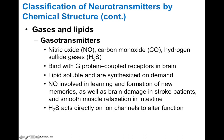Gases and lipids can also be used as neurotransmitters. There's a whole class called the gasotransmitters, like nitric oxide, carbon monoxide, and hydrogen sulfide. Although these are gases, they're also neurotransmitters. They bind with G-protein coupled receptors, and nitric oxide is involved with learning and memory, as well as brain damage in stroke patients and smooth muscle relaxation.